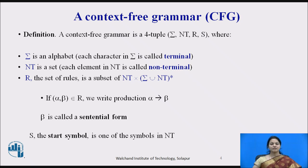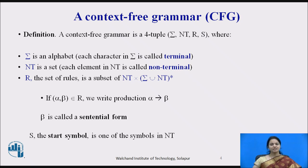A Context-Free Grammar is a four-tuple: Sigma, NT, R, and S. Where Sigma is an alphabet set and each character in Sigma is called a Terminal. NT is also a set and each element in NT is called a Non-Terminal. R is the set of rules; it is a subset of Non-Terminals and Terminals. The production is written in the form of Alpha producing Beta, where Beta is called a sentential form.